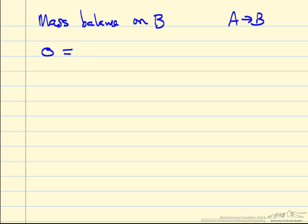Since A is going to B, steady state, accumulation term is zero, there's no flow of B into the reactor.